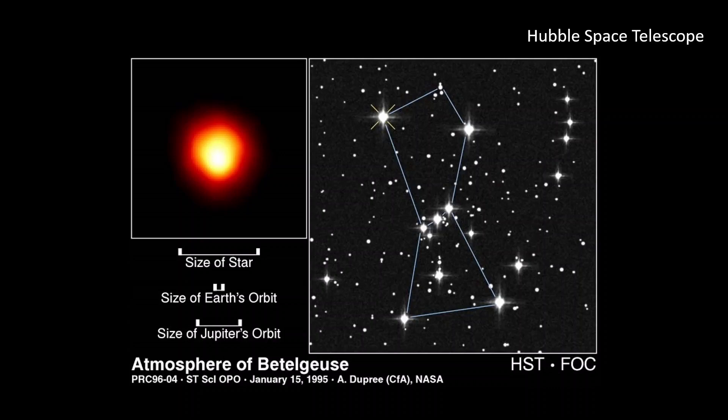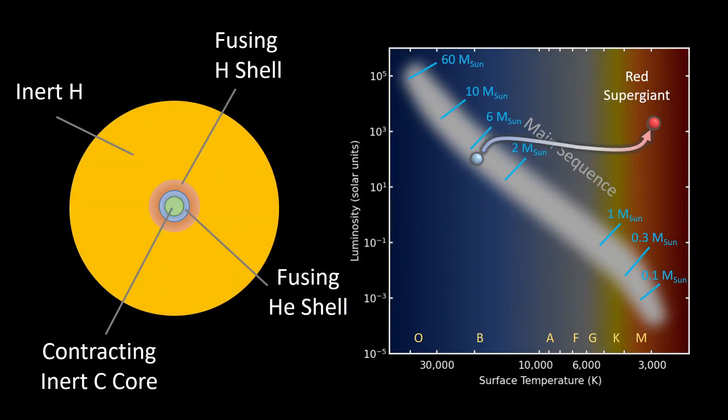When helium available for fusion is depleted and the inert helium core is formed, the fate of intermediate and high mass stars diverges. Intermediate mass stars will never reach central temperatures needed to fuse carbon. These stars eventually throw away their upper layers and finish their lives as white dwarfs. In contrast to low and intermediate mass stars, high mass stars formed with about 8 solar masses or more will have no problem reaching the temperature of 600 million Kelvin required to start fusing carbon in their cores.